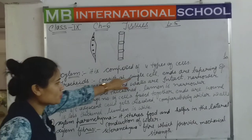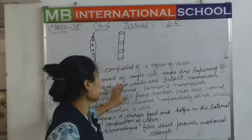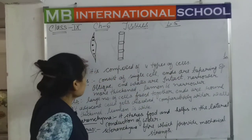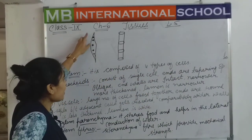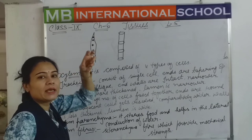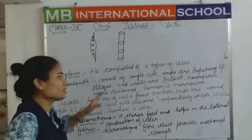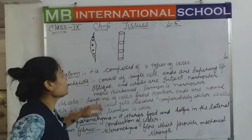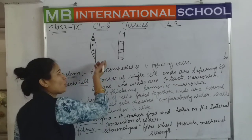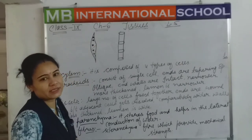Tracheids consist of a single cell — only one type of cell exists there. The ends are tapering, meaning the cell ends are sharpened, not blunt. These are oblique sections, meaning the section of each cell is at an oblique angle.